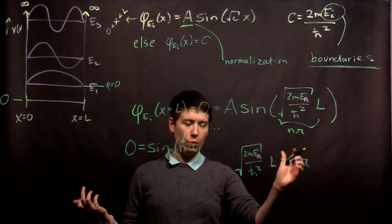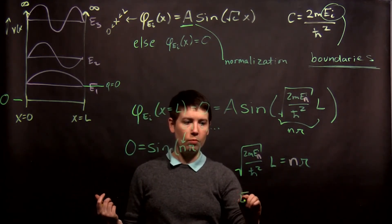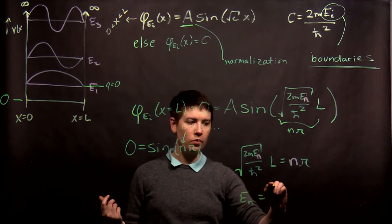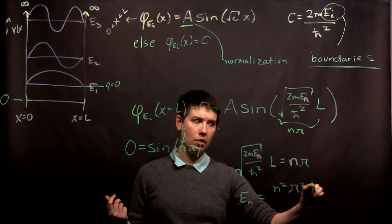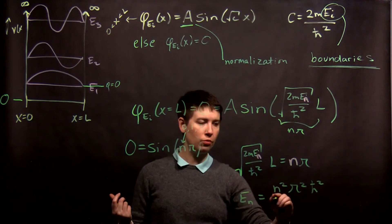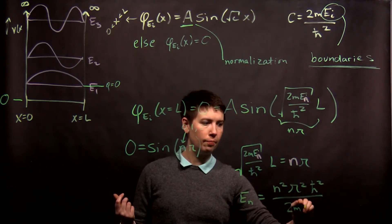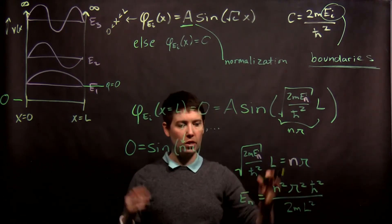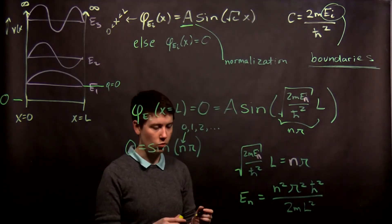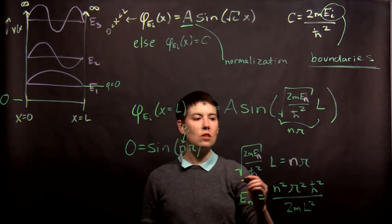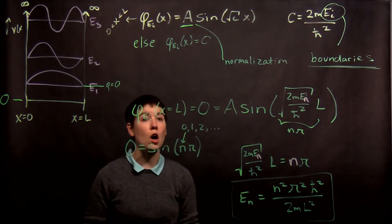So, what we're trying to solve for here are the energies that are allowed. So, let's square both sides and rearrange. I'm left with e sub n equals n squared pi squared h bar squared over 2m L squared. So, I just squared and rearranged. This is now a condition on what the allowed energies are.